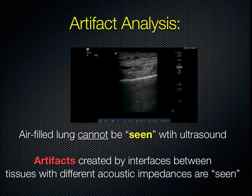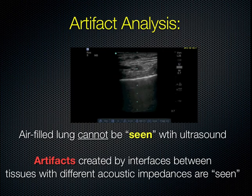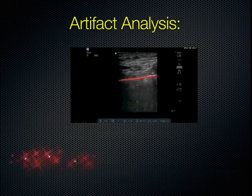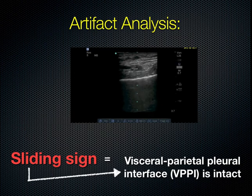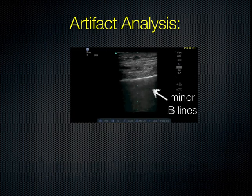Now we're going to use this high-frequency image to analyze artifact. We can't see the lung itself, but we can see the artifact created by the interfaces between tissues with very different impedances, such as the pleural line and lung. Here is the visceral parietal pleural interface, and what we're seeing here is a sliding sign — it tells us that the visceral parietal interface is intact. In other words, the visceral pleura is adjacent to the parietal pleura and they're sliding against each other. The motion at the sliding sign at the pleural interface looks a bit like ants crawling across, or shimmers. We have very minor B lines here and there's an A line because this lung is mostly aerated.